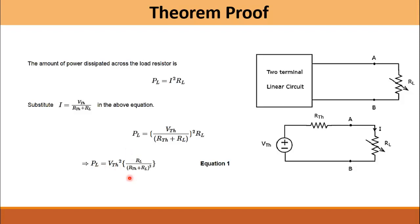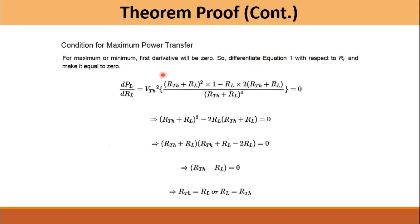Now we will find the value of the maximum power that can be absorbed by this load. In order to find the maximum power, we take the derivative with respect to the load resistance and equate this derivative equal to zero. After solving this expression we arrive at R_Thevenin minus R_L equals zero.